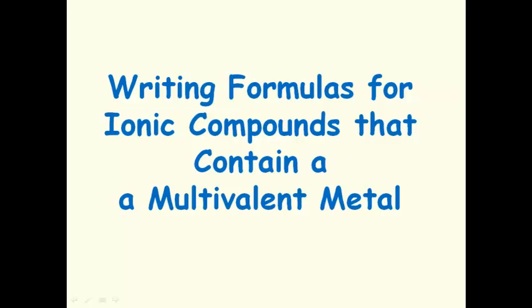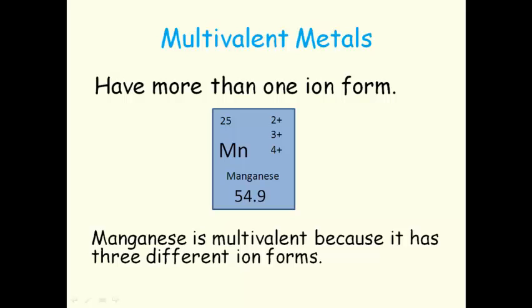Writing formulas for ionic compounds that contain a multivalent metal. Multivalent metals have more than one ion form. Manganese is multivalent because it has three different ion forms: 2+, 3+, and 4+.